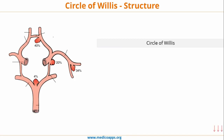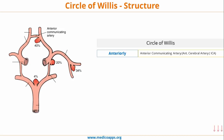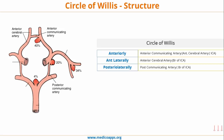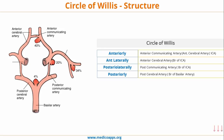Now let's look specifically at the Circle of Willis and its component arteries. Anteriorly, we have the anterior communicating artery, a branch of the anterior cerebral artery, which came from the internal carotid artery. Anterolaterally, we have the anterior cerebral artery, a direct branch of the internal carotid artery. Posterolaterally, we have the posterior communicating artery, also a branch of the internal carotid artery. Posteriorly, we have the posterior cerebral artery, a branch of the basilar artery. Importantly, the internal carotid artery forms 80% of the Circle of Willis circulation, while the posterior cerebral artery accounts for approximately 20%.